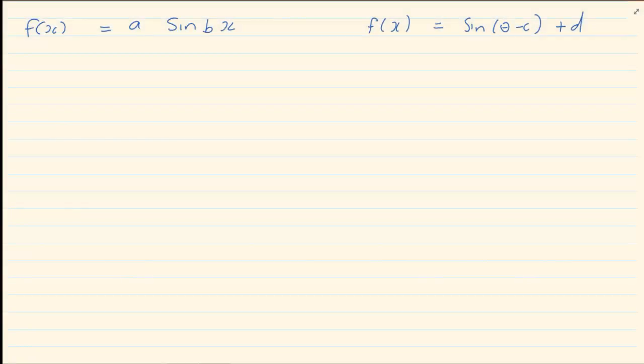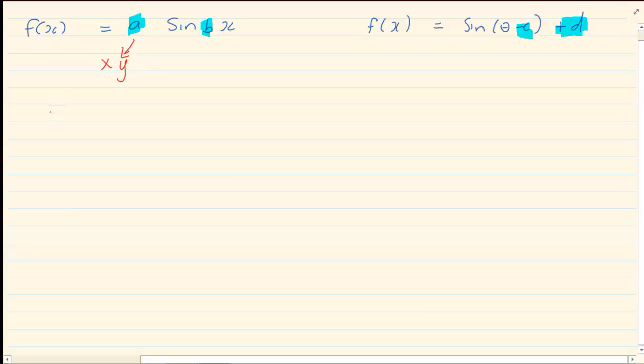When you look at the equations, there's four specific adjustments we have. Two of them you had already done in Grade 10. It was A and the effect of A was it times the Y. When we want to get A, the method of getting A is to take the maximum minus the minimum and divide it by 2.